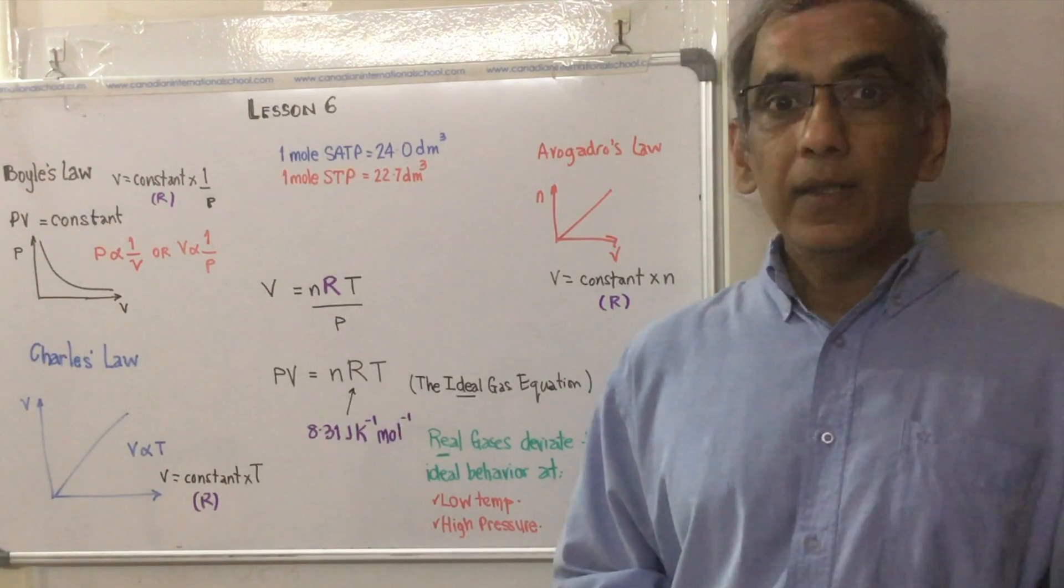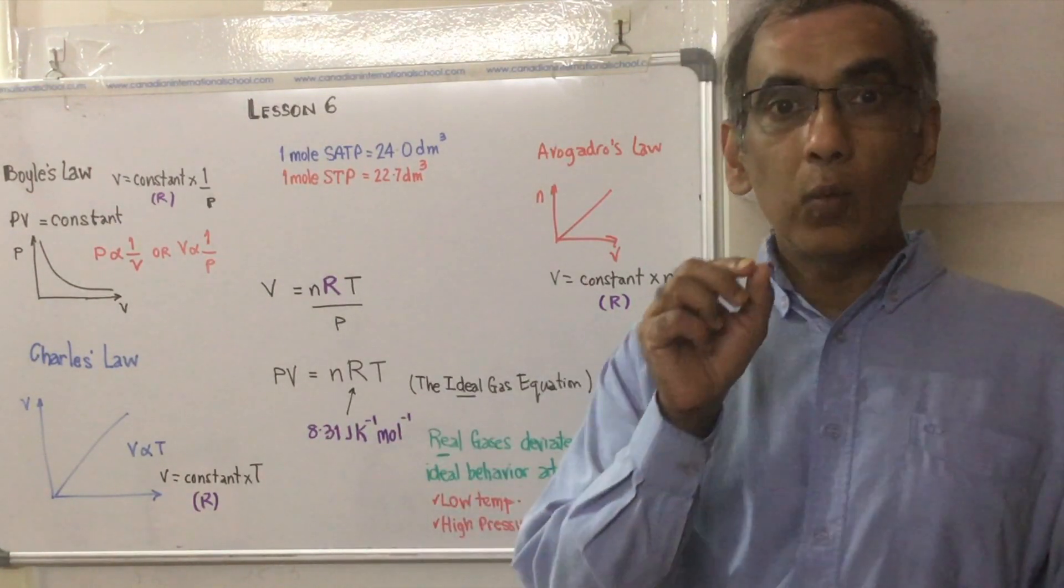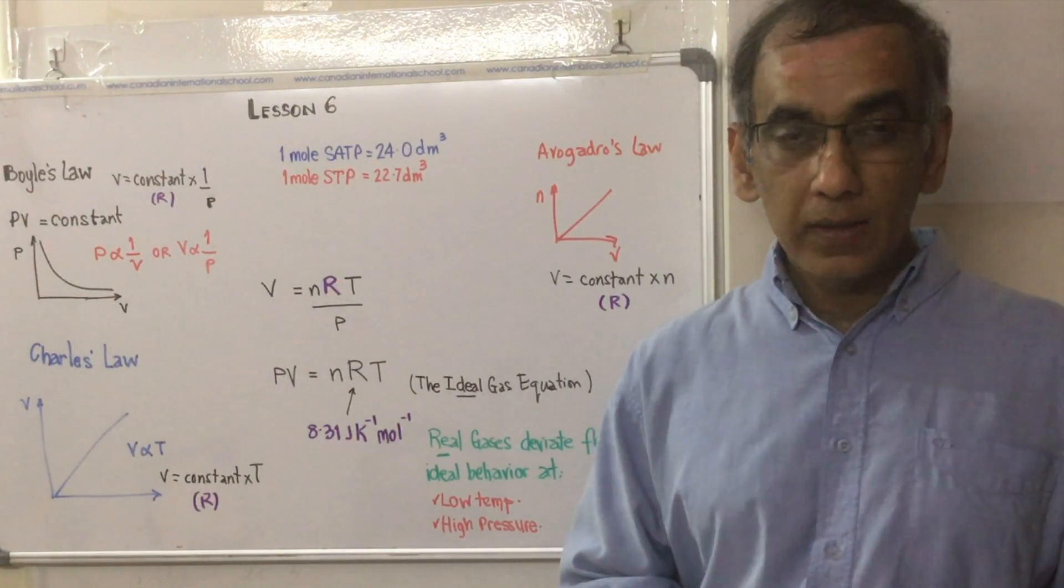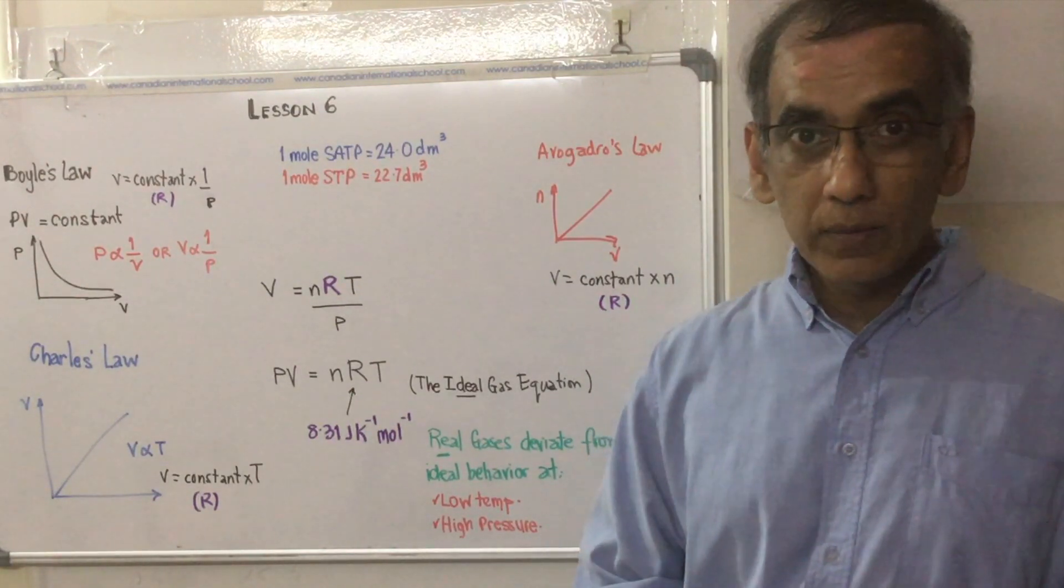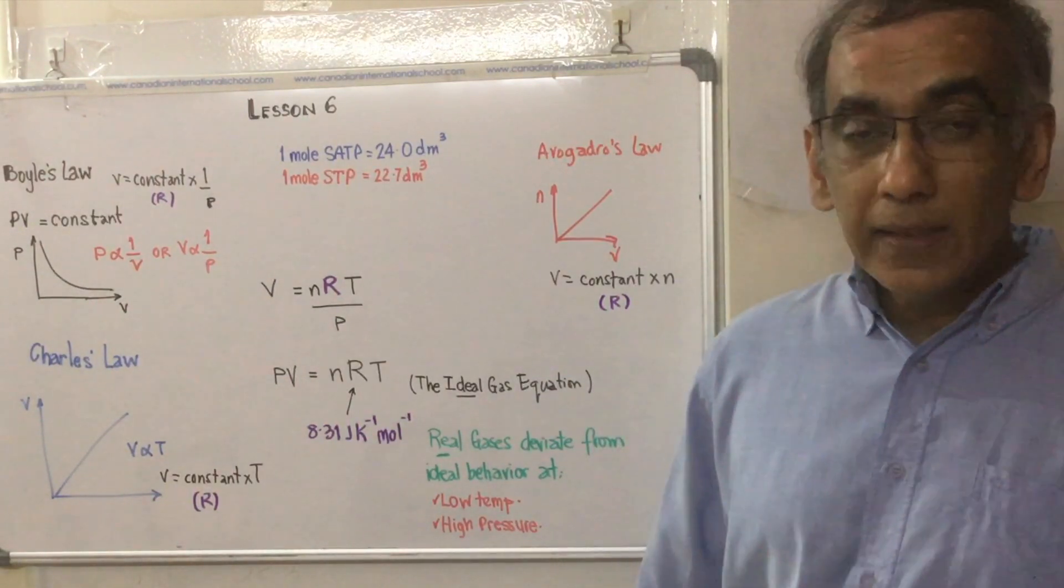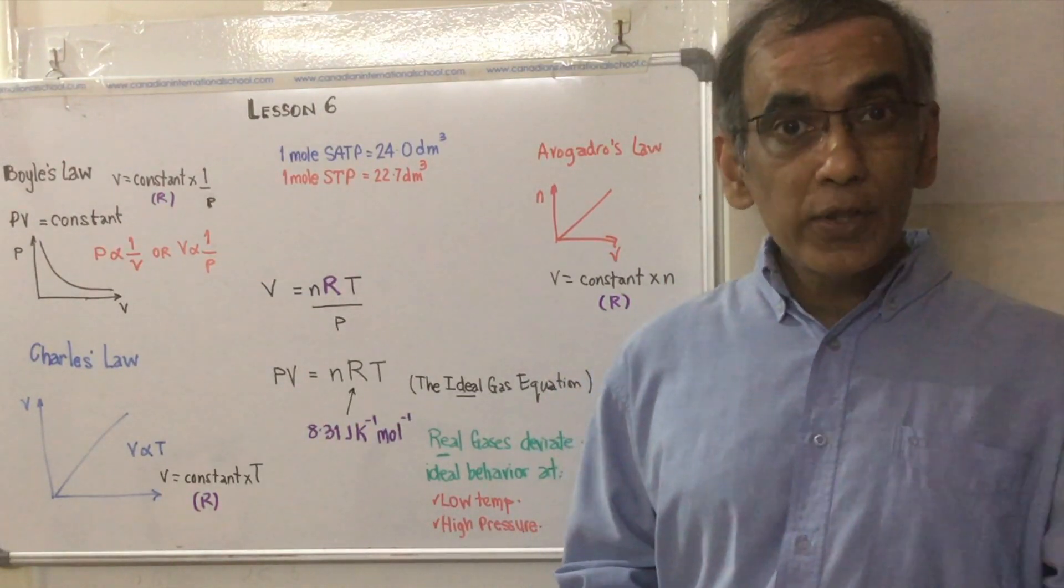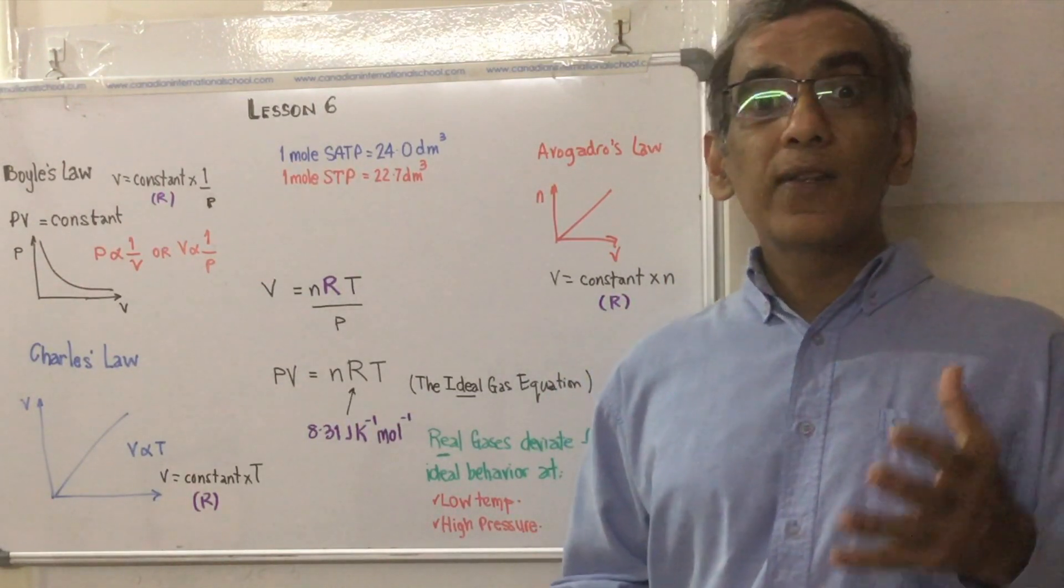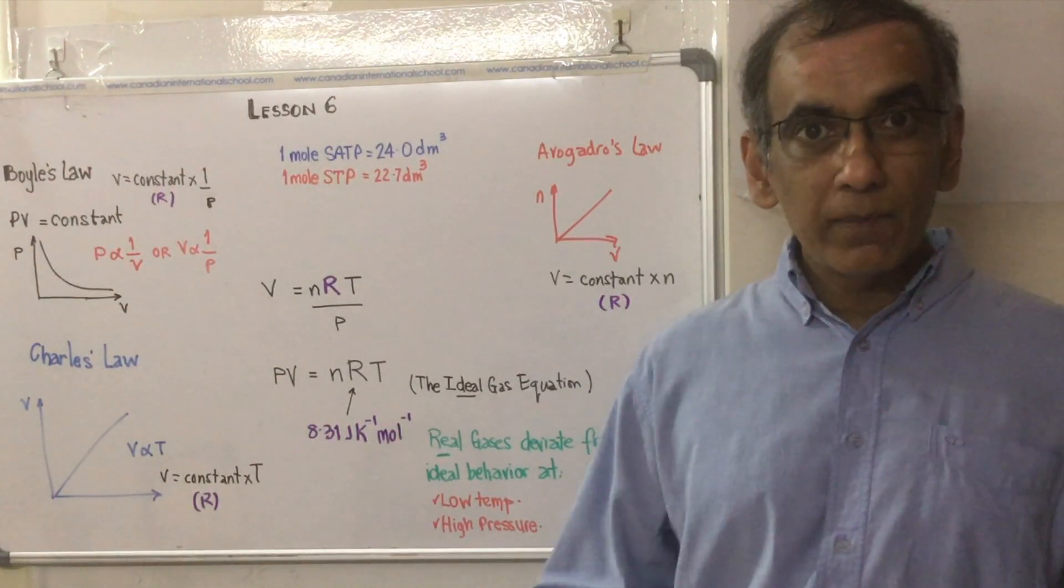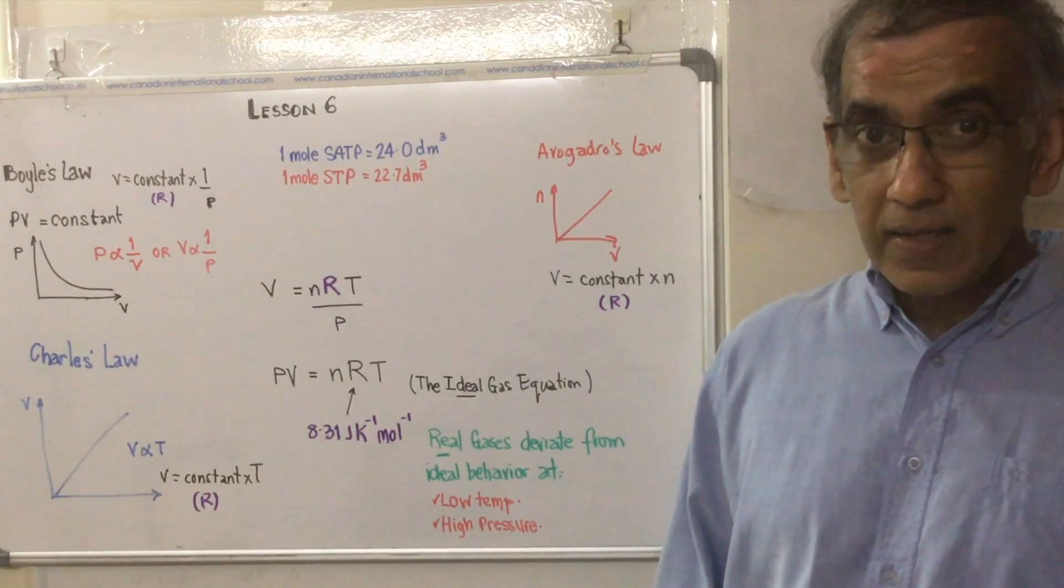One liter equals 1000 cm³ and one cm³ equals one milliliter. So here's the issue. Suppose we had 500 milliliters of carbon dioxide in a balloon but the temperature in our room was 38 degrees Celsius but we were at standard pressure.